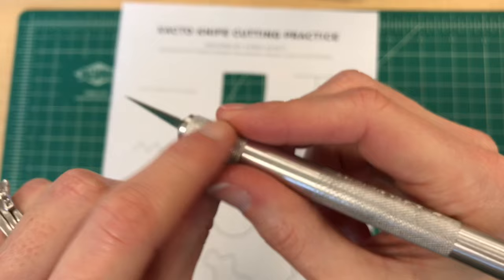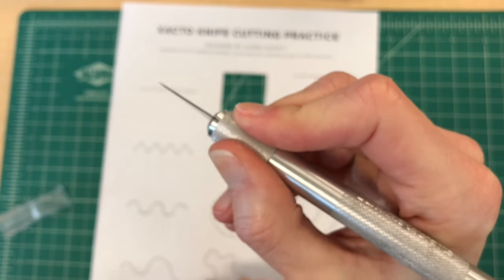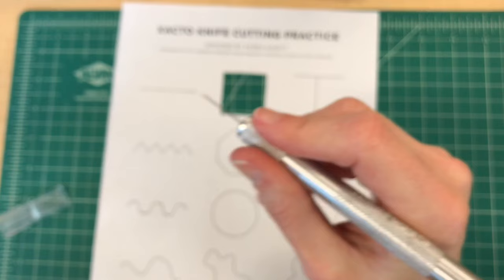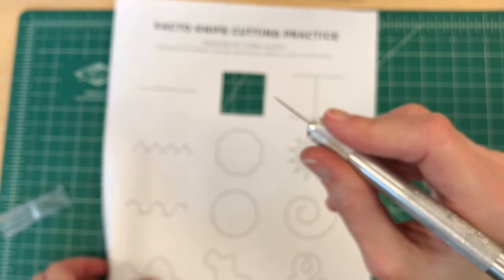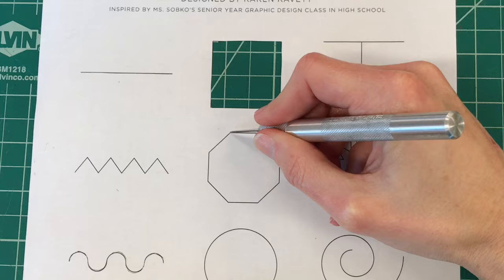When holding the craft knife, hold it on the rough part using the hand that you write with. You will always need to cut on a self-healing mat, never straight on the tabletop or any other surface.